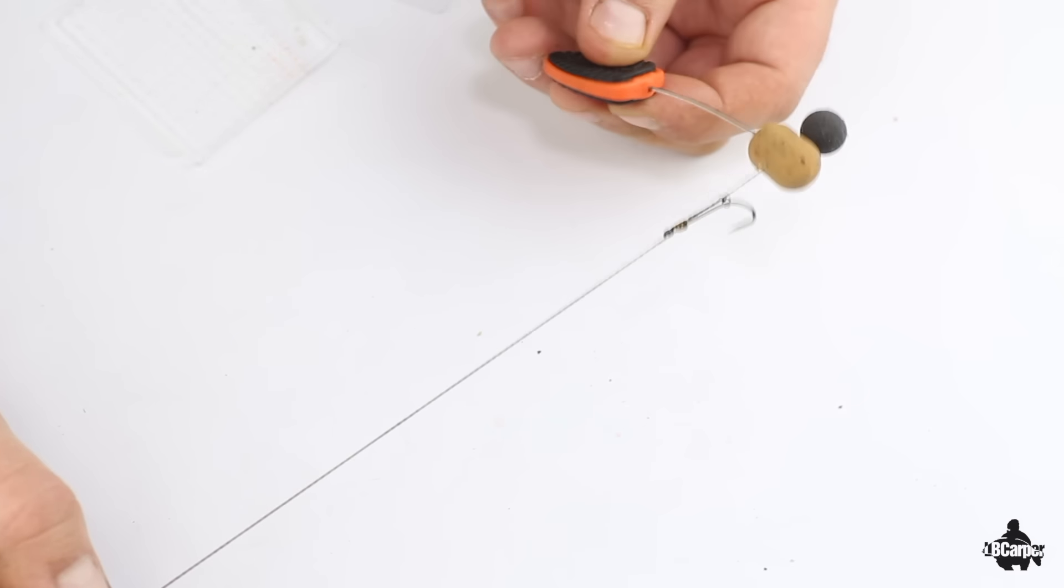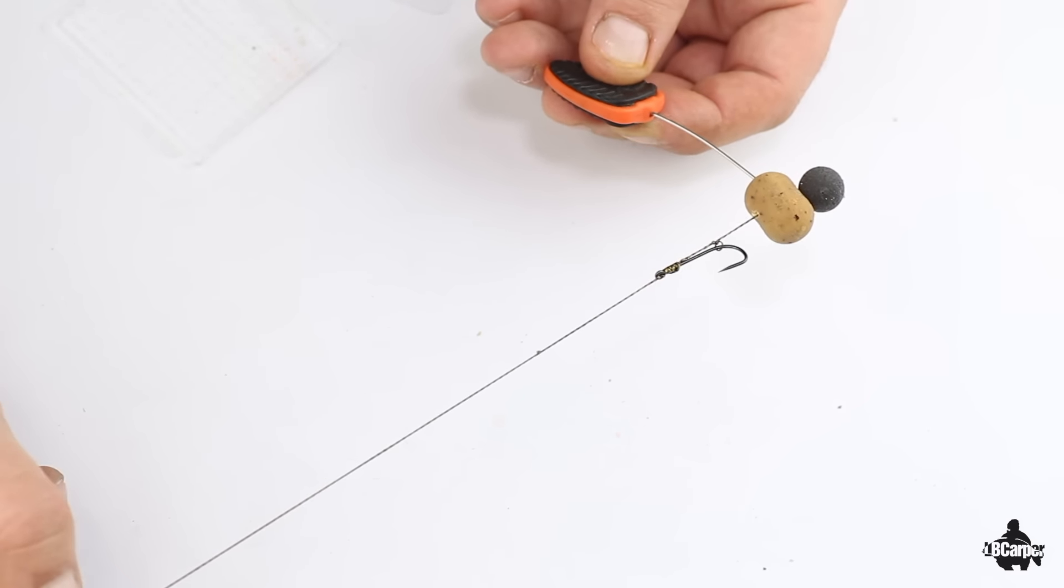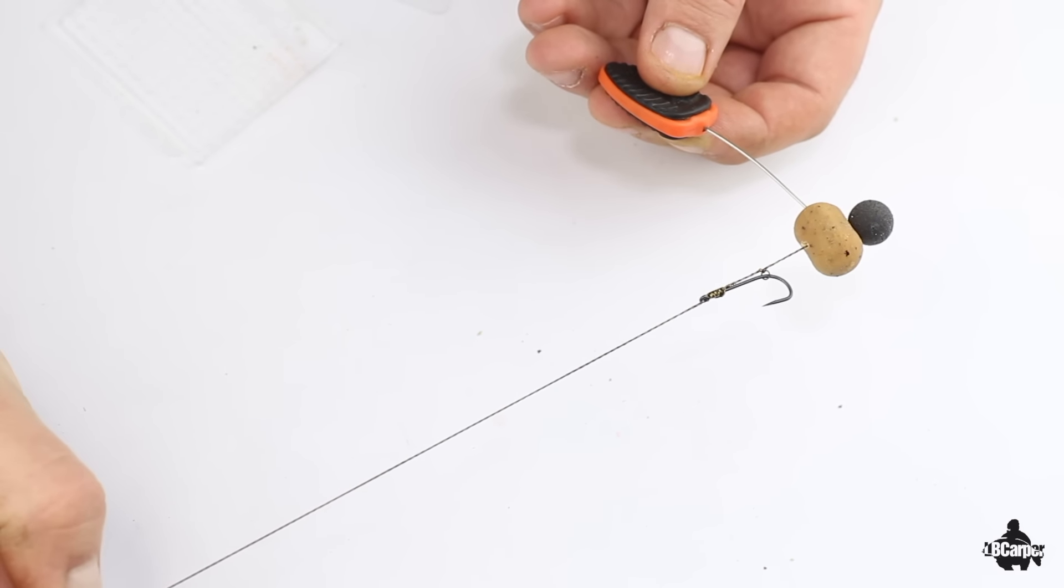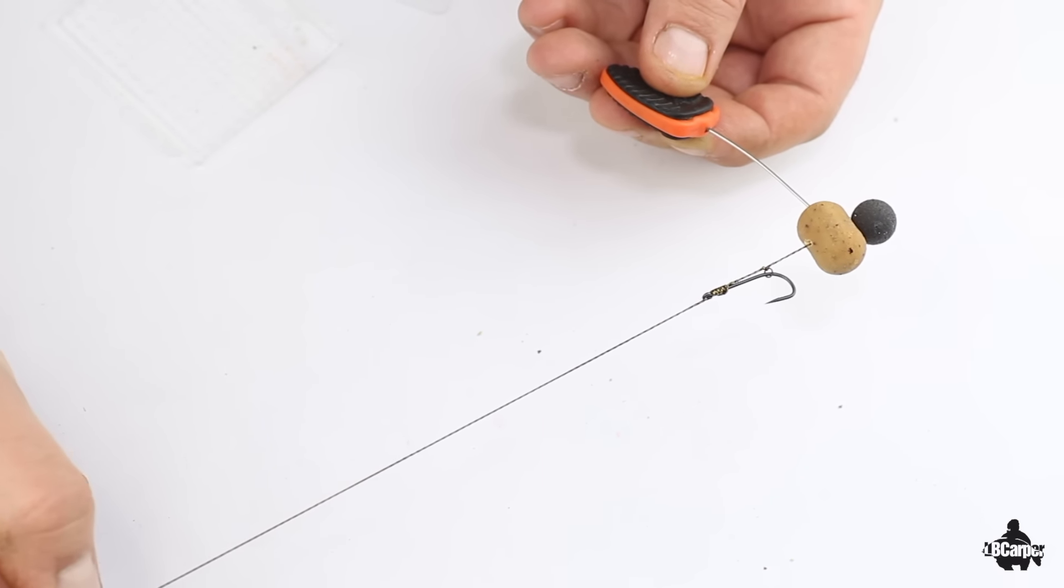I'm going to show you a nice braid rig that turns really well in the carp's mouth. I've done very well on this rig over the years as well and it's a real simple rig to tie and it's very effective.